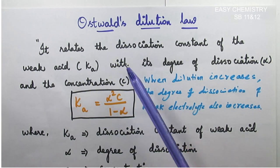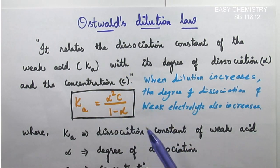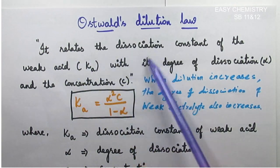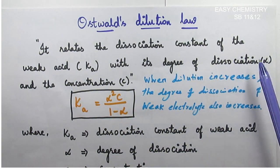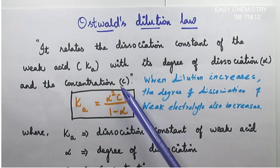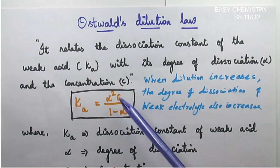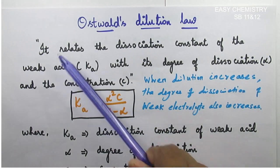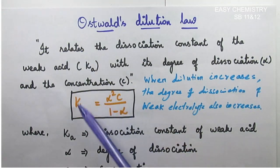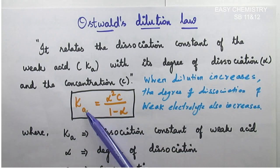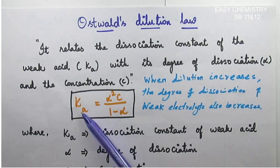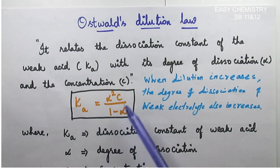The first question: what is Ostwald's dilution law? It relates the dissociation constant of the weak acid with its degree of dissociation and the concentration c. In the formula, we call it the dissociation constant Ka. The formula is: Ka is equal to alpha squared times c divided by one minus alpha.